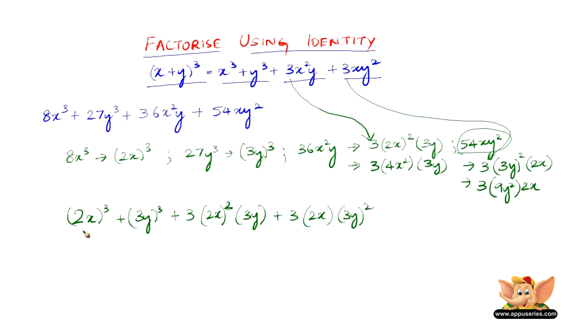Which is nothing but x³ + y³ + 3x²y + 3xy². Therefore, this is nothing but (2x + 3y)³, as x is 2x and y is 3y.